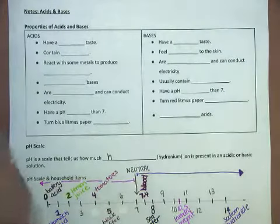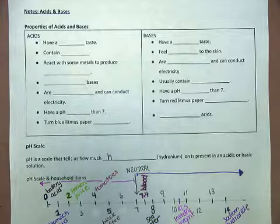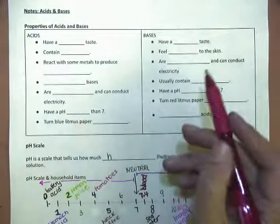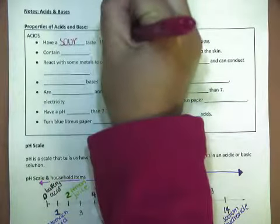Acids and bases. Properties of acids and bases. Acids and bases are usually opposites. Acids have a sour taste. You can think of something like a lemon.